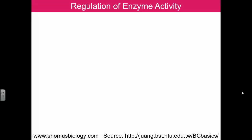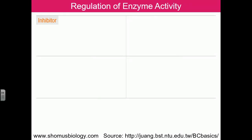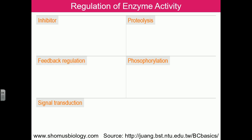Let's look at regulation of enzyme activity in the post-translational regulation pathway. There are different ways inhibitors can regulate enzyme activity. Proteolysis can regulate enzyme activity. Phosphorylation can sometimes render an enzyme inactive or active. Signal transduction can be a major event regulating protein function, and feedback regulation is another mode of influencing enzyme activity.